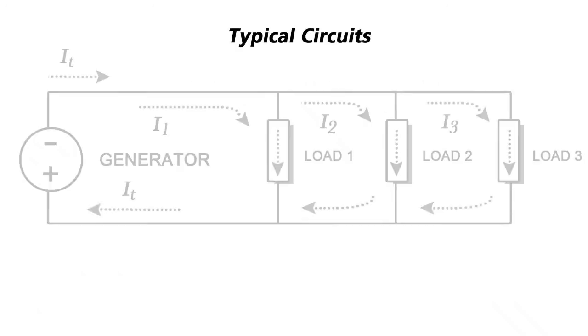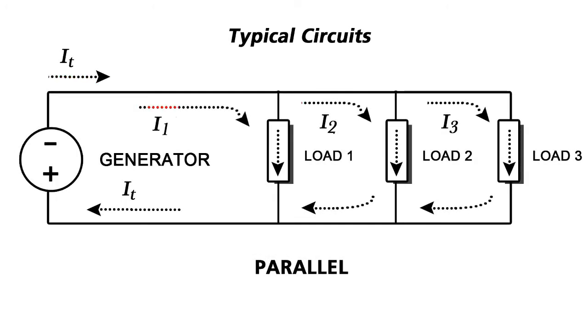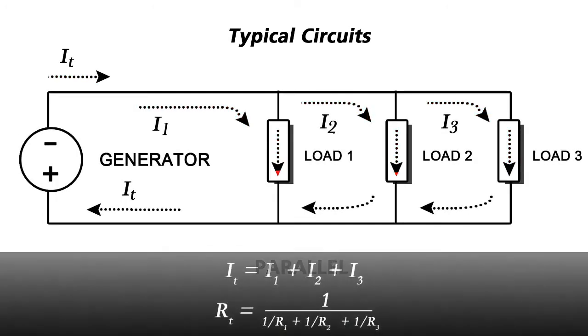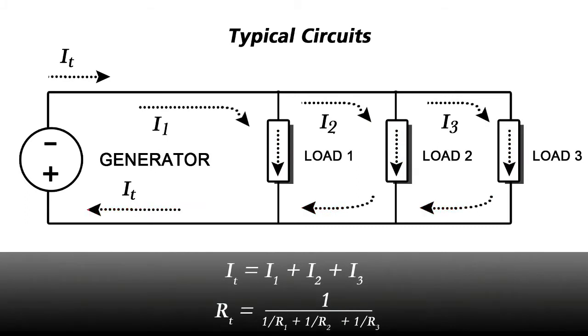In a parallel circuit, current divides between multiple parallel paths. The total resistance then is a quotient and not a sum.